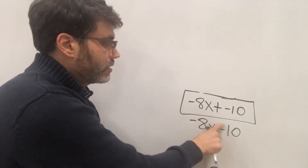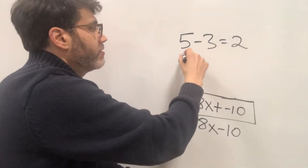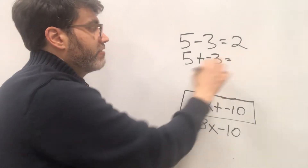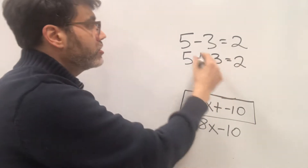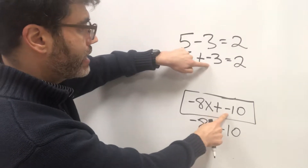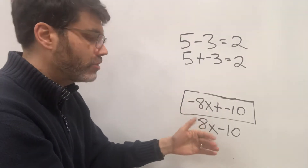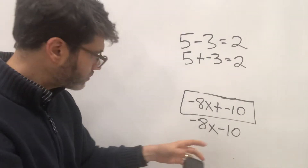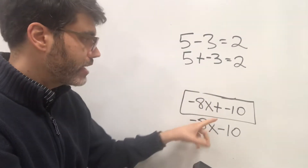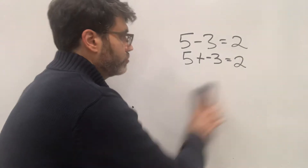Why do those mean the same exact thing? Let's go back to 5 minus 3: that equals 2. If I make this into adding a negative 3, then 5 plus negative 3 is also positive 2. The subtraction sign is equivalent to adding a negative. So feel free — if something looks complicated — to turn a subtraction sign into a plus negative to make it more visually understandable. We're going to use that skill in this distribution problem.